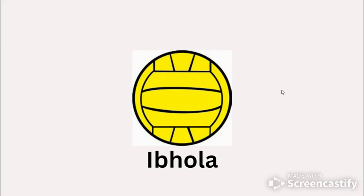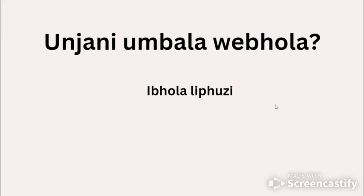Sibona ibola — we see a ball, and the color of the ball is yellow. Ibola lipuzi. The color yellow in isiZulu is puzi. Unjani umbala wengubo? What color is the ball? Ibola lipuzi — the ball is yellow. Puzi is yellow.